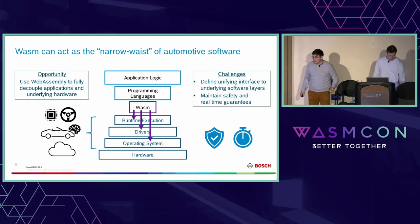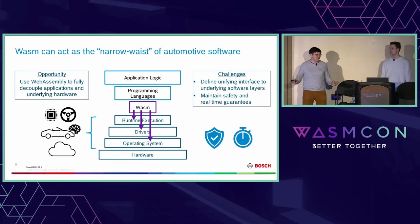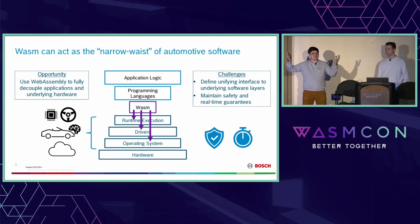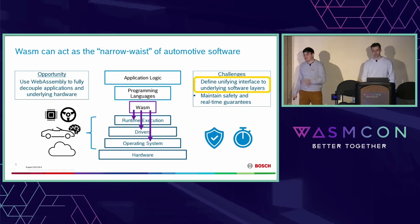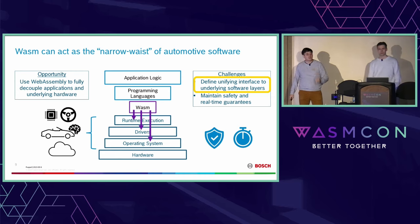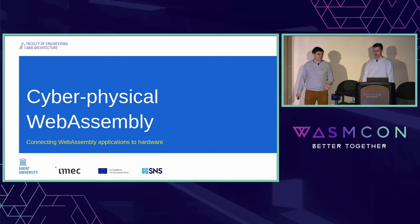Last year at WasmCon, a representative from Bosch put up a slide showing WebAssembly as a narrow waist of automotive software, making sure this incredible diversity in languages and compiler toolchains all compile to WebAssembly, which can then target the incredible diversity of applications, operating systems, and hardware. They defined a key challenge: defining unified interfaces from WebAssembly to the underlying software layers. This is actually one of the things we're working on — we call it cyber-physical WebAssembly: interfaces to connect WebAssembly applications to hardware.